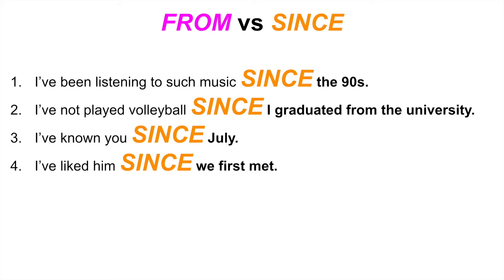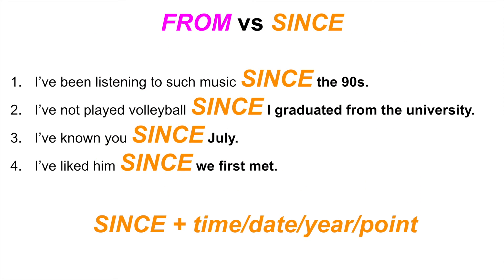'I've not played volleyball since I graduated from the university' — I graduated and haven't done that since, showing a lack of experience and measuring the duration. 'I've known you since July' — meaning July, August, September, October, November, showing we are still friends. 'I've liked him since we first met' — since that starting moment up to this point it's still happening, and I show you the duration. After 'since' you can put a time, date, year, or some time point.